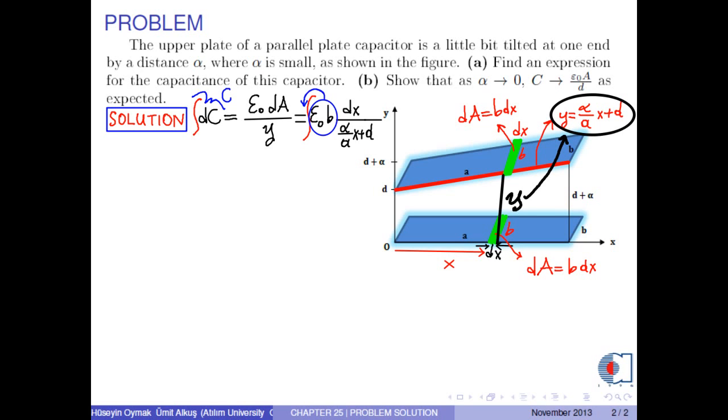Epsilon zero and b are constant and they can be taken outside the integral sign. The integral is over x. Therefore, the integral limits are 0 and a.